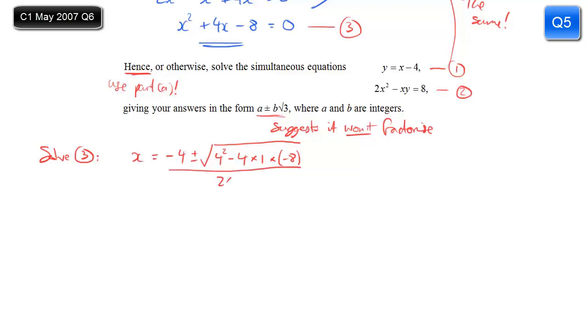All divided by 2a. So divided by 2 times 1. So that's minus 4 plus or minus the square root. If we tidy this up, 4 squared is 16. Minus 4 times 1 times minus 8 is plus 32. Get the signs right. And that's divided by 2.